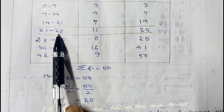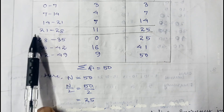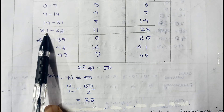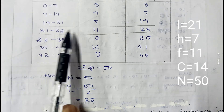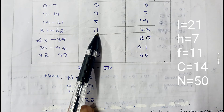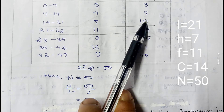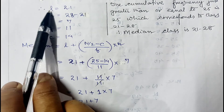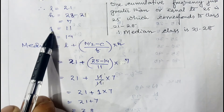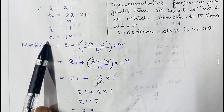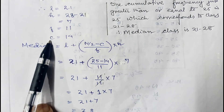Since 21 to 28 is the median class, the lower limit l is 21. The width of each class h is 28 minus 21, which is 7. The frequency of the median class f is 11. The cumulative frequency of the class preceding the median class c is 14.